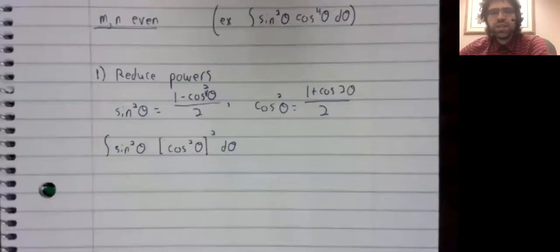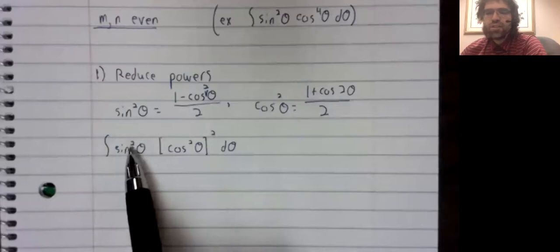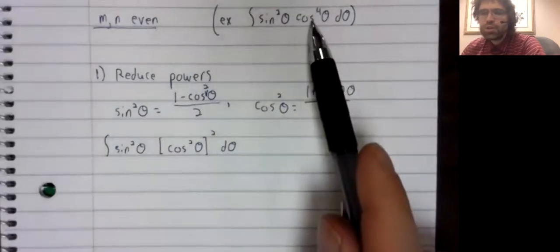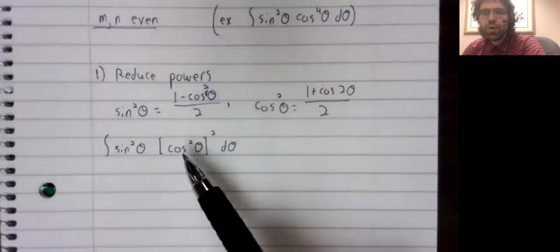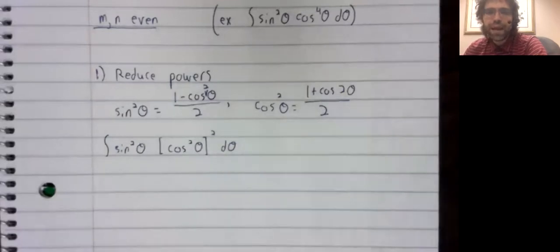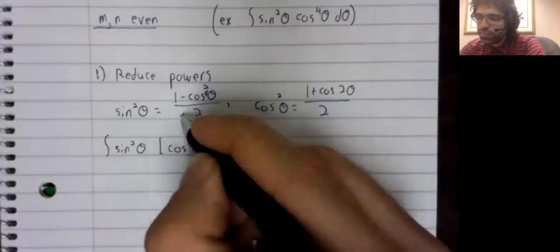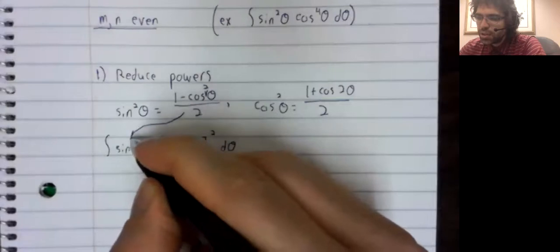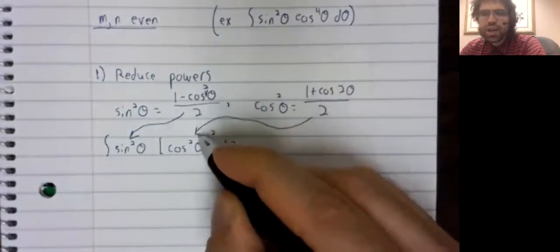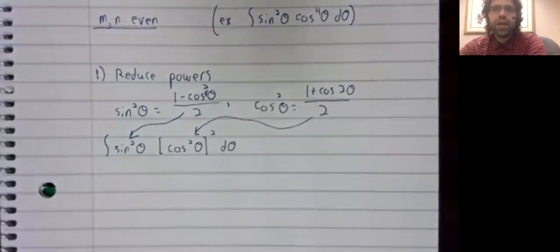Well, in this example, the sine is already a square, we leave it alone. But the cosine to the fourth is the cosine squared squared. And then we take these identities and we plug them in.